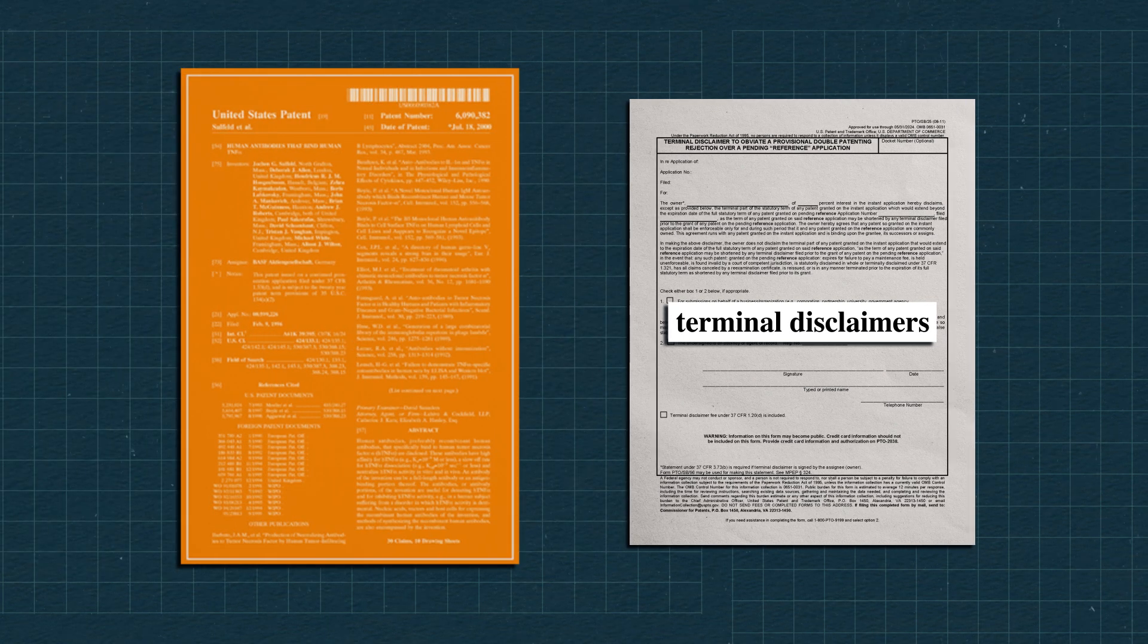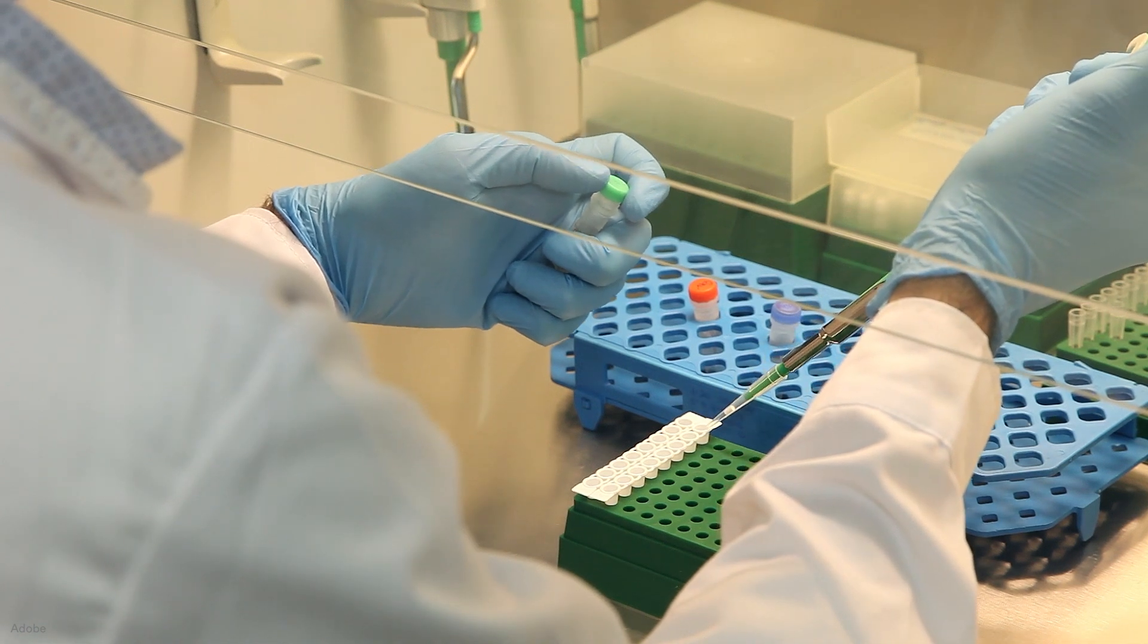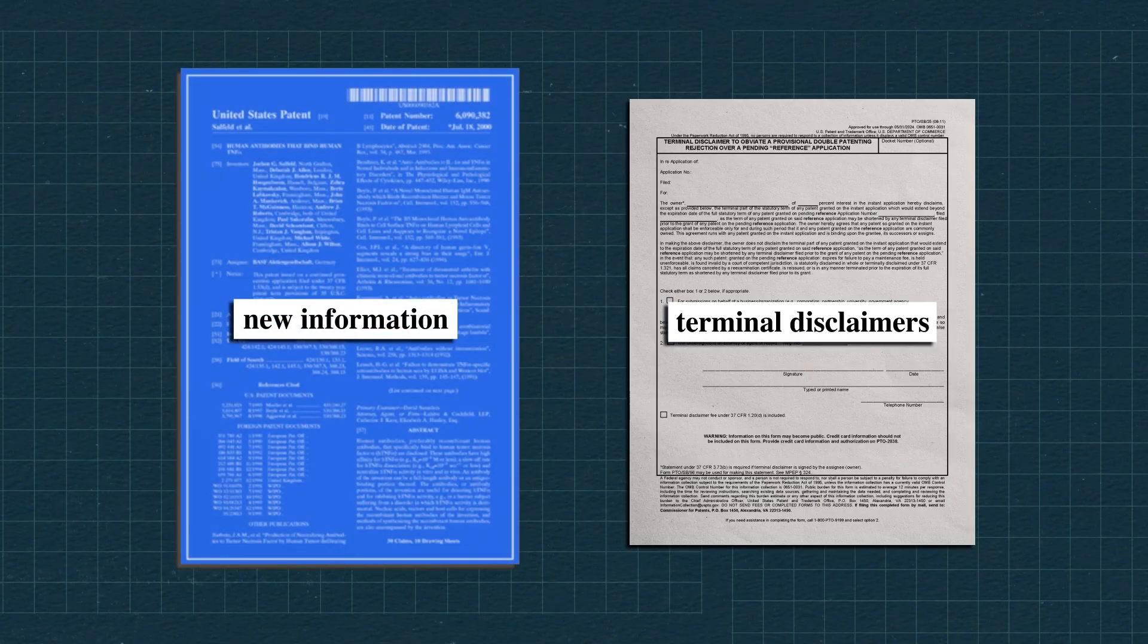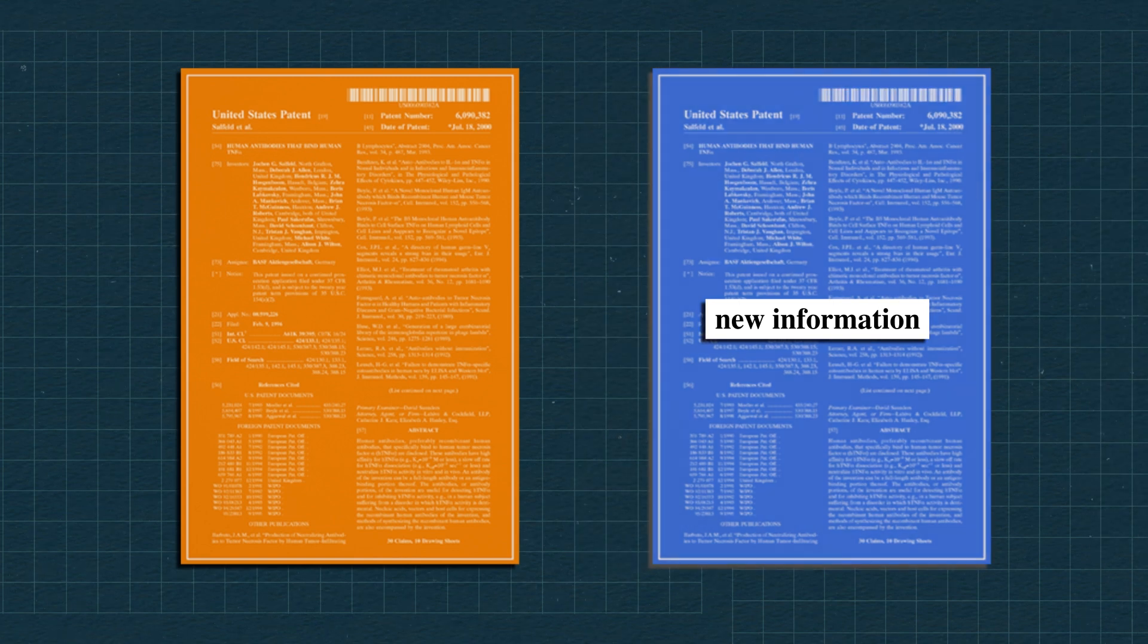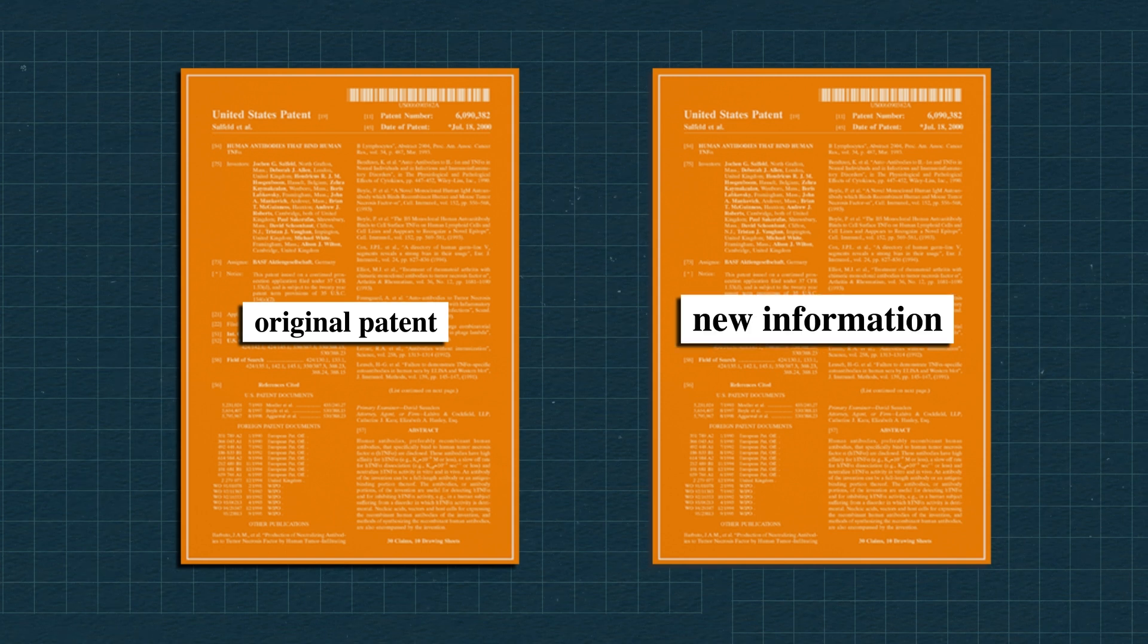Let's take one of Humira's original patents on its formula. Say AbbVie scientists and researchers did more work in the lab, gathered more experimental results, and now have a bit of new information on this formula. This information might be obvious in light of its original patent, and not patentably distinct, but it's still new information.